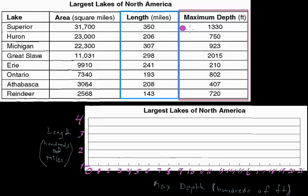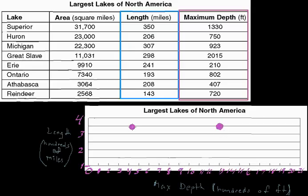Let's look at Lake Superior. Lake Superior has a maximum depth of 1,300 feet, so we go to 1,300 on the horizontal axis, and also up about 3.5 units on the vertical axis. So that point — right about there — is Lake Superior. I've got it labeled, and I can move on.